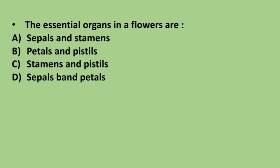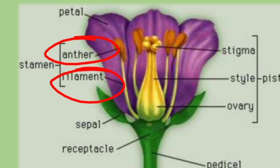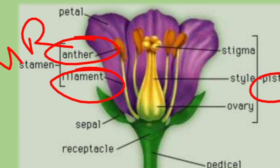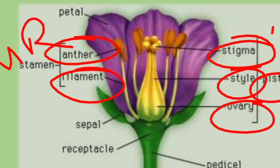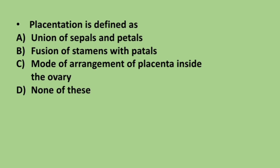Next question: the essential organs in a flower are — options are sepals and stamens, petals and pistils, stamens and pistils, or sepals and petals. The correct answer is option C, stamens and pistils. Stamens consist of anther and filament and are the male reproductive part. Pistil consists of stigma, style, and ovary, and is the female reproductive part. That is why they are the essential organs in a flower.